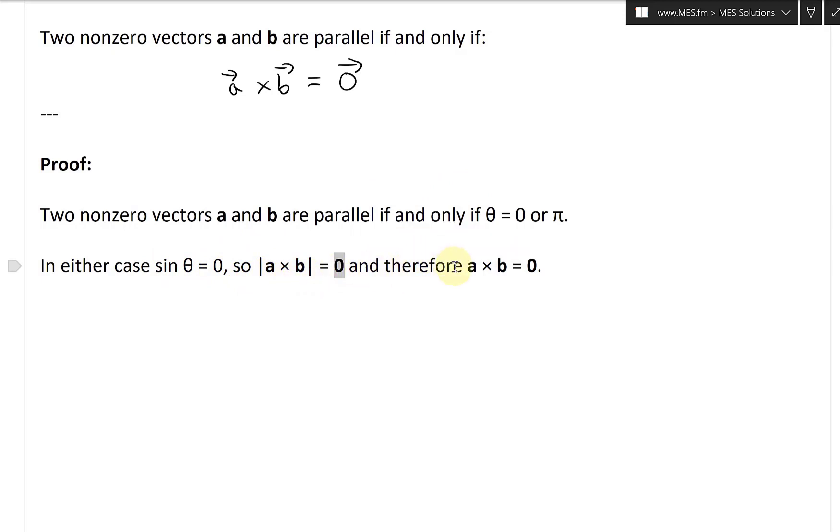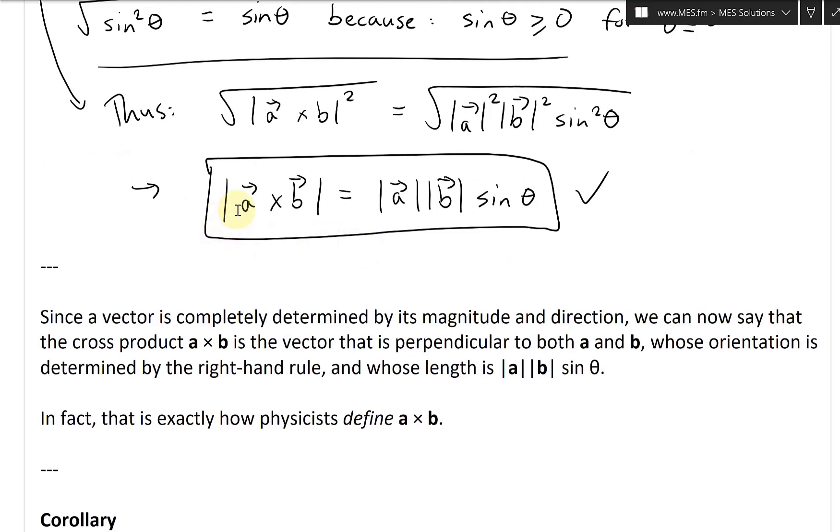And therefore, the distance equals zero and therefore A cross B equals zero. So in other words, this right here has to equal zero.